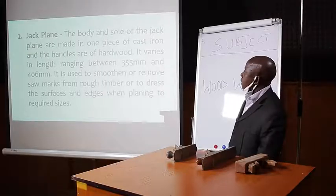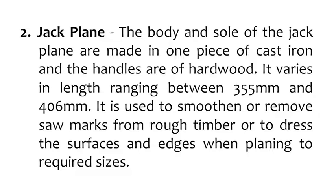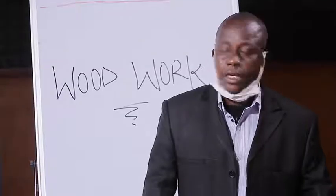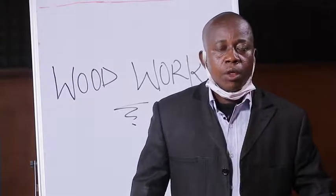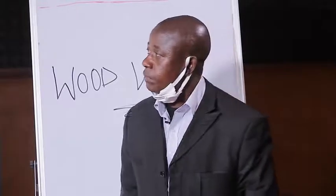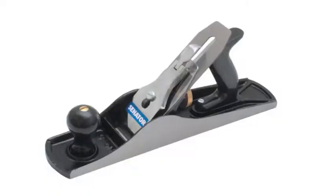The second type is the jack plane. The body and sole of the jack plane are made in one piece of cast iron, with handles of hardwood. The length of the jack plane ranges between 355 millimeters and 406 millimeters. The function of the jack plane is to smoothen or remove saw marks from rough timber, or to redress the surface and edges when planing to required sizes — that is, it does the initial planing of the wood surface. On the board, that is the picture of the jack plane.